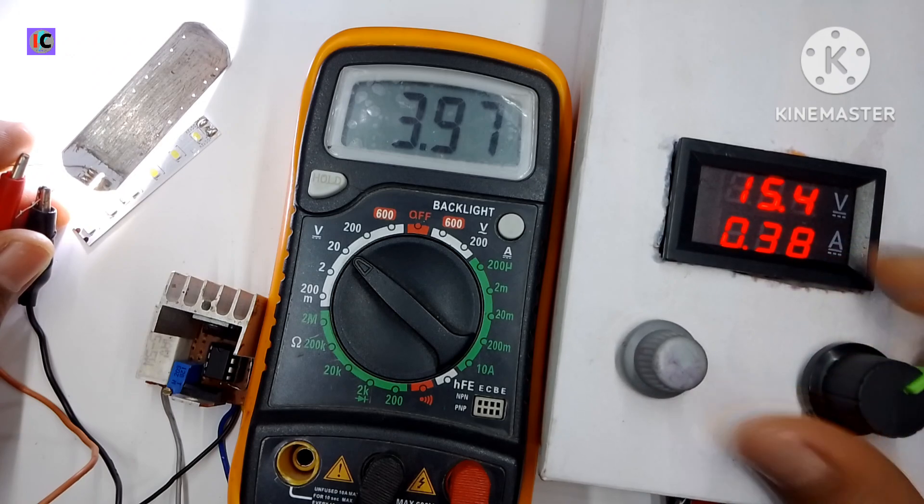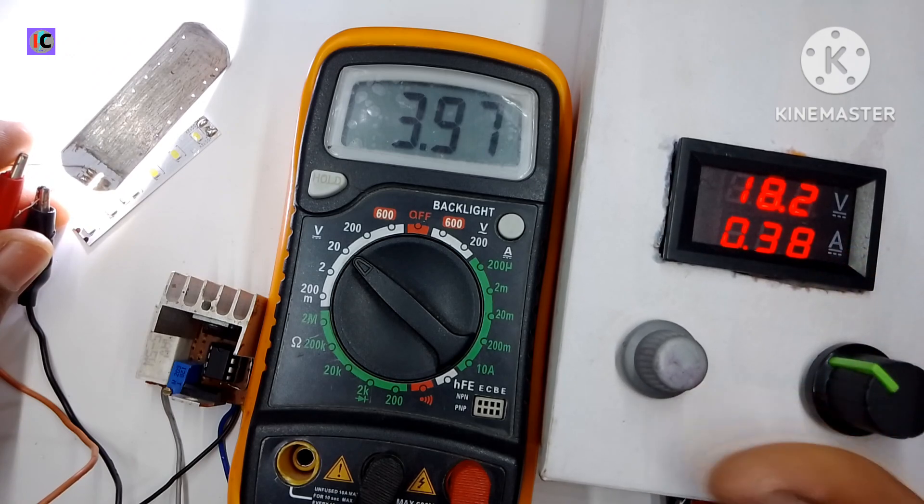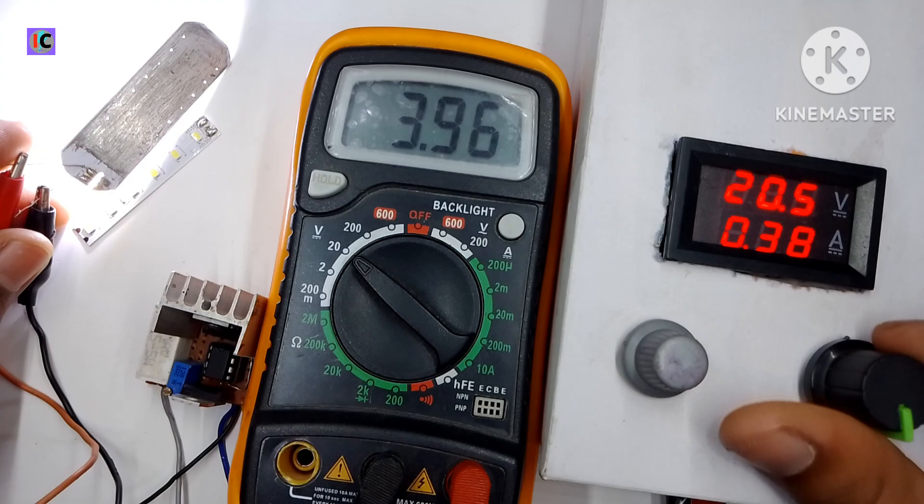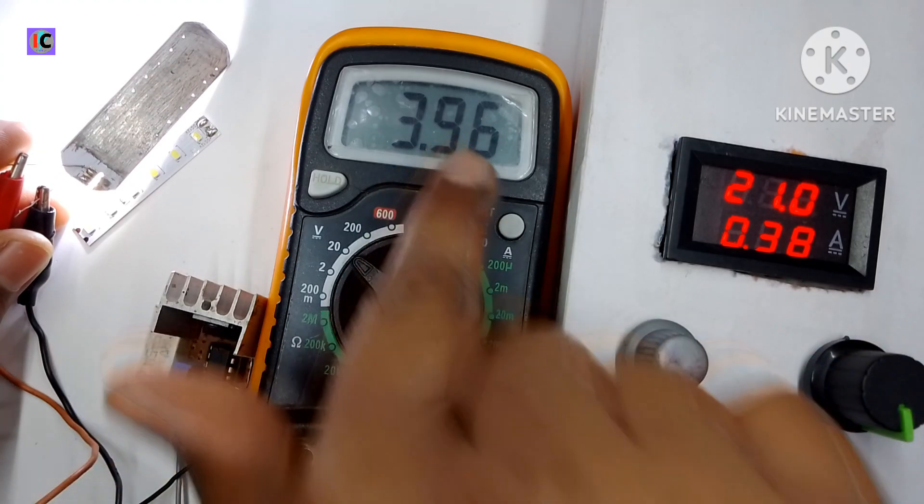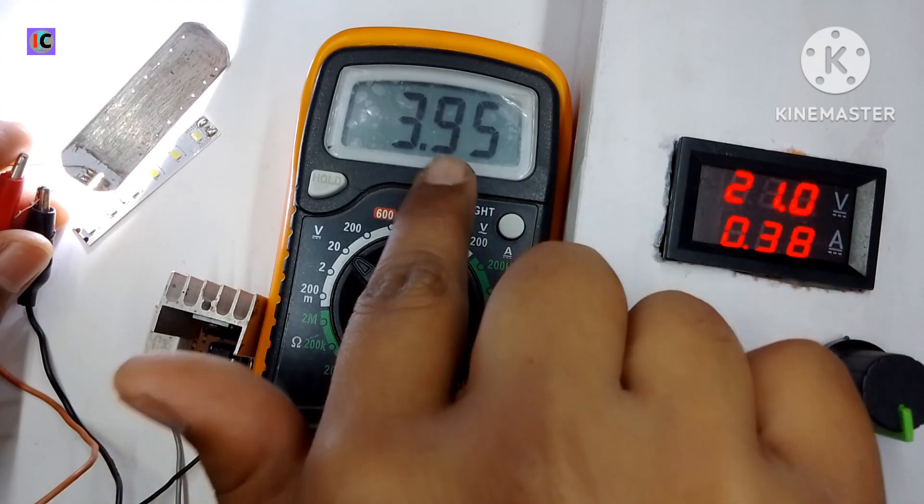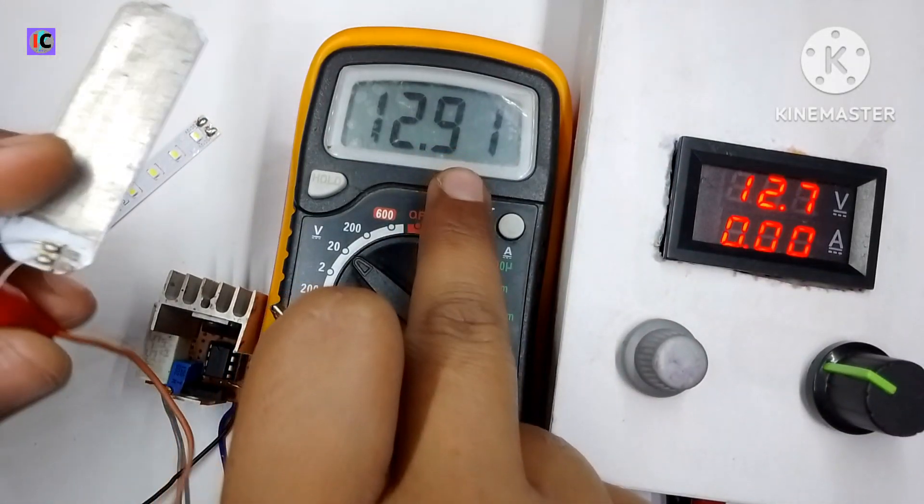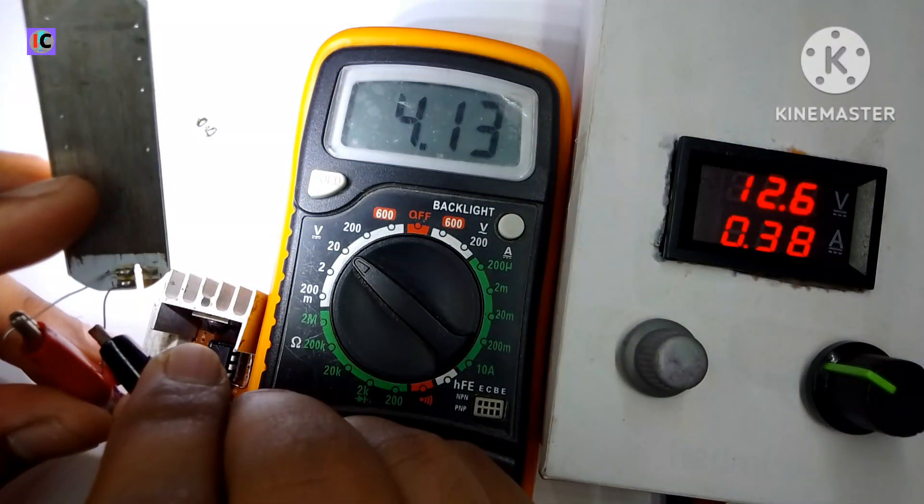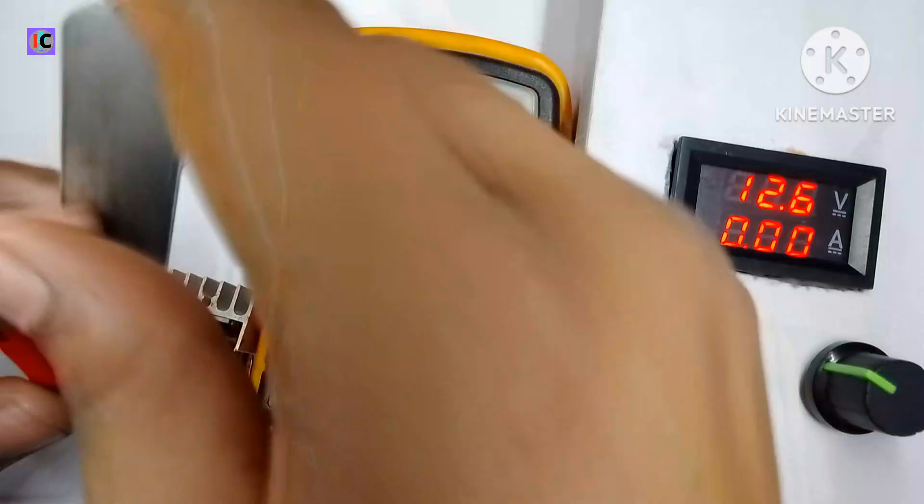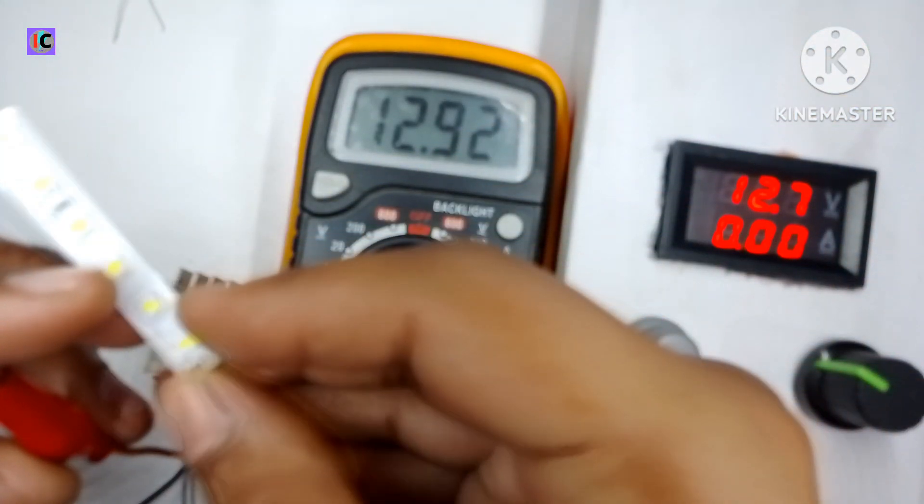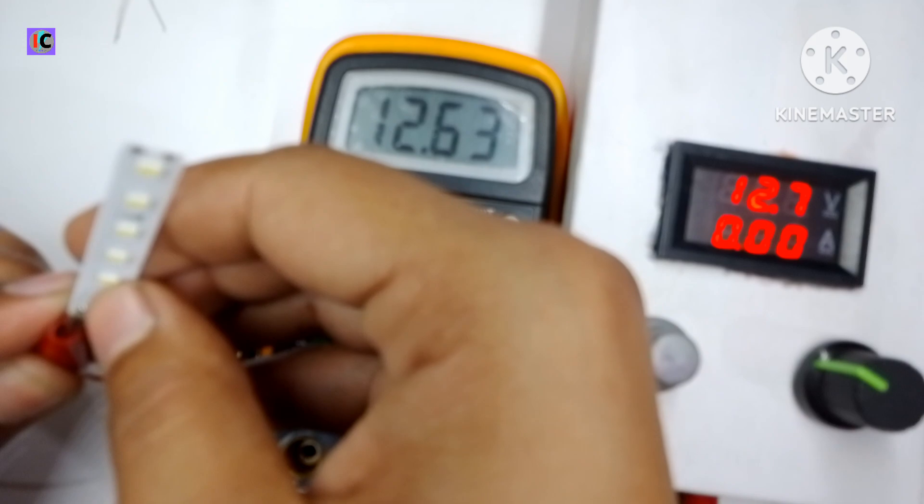As you can see the current is constant at 0.38 amperes as well as the output voltage for this LED. When I disconnect the LED the voltage increases to 12.9 volts, but when I reconnect it again the current limit is activated and the voltage drops as the LED requires.